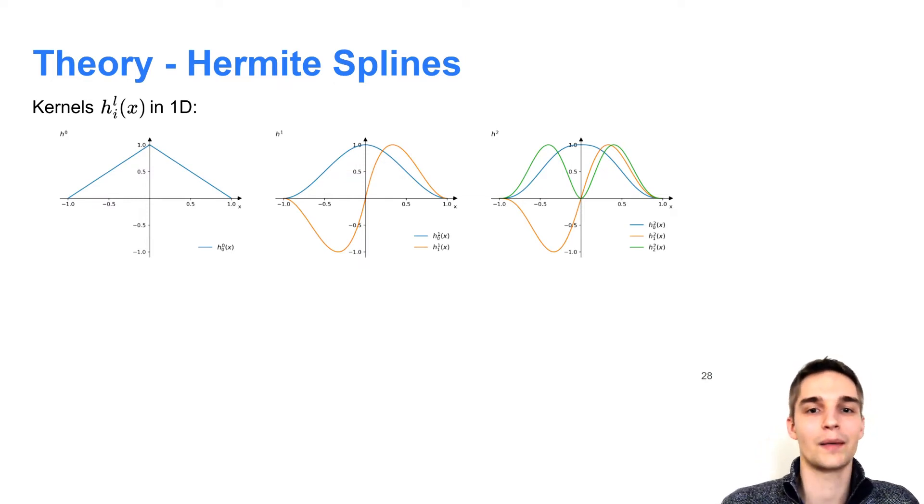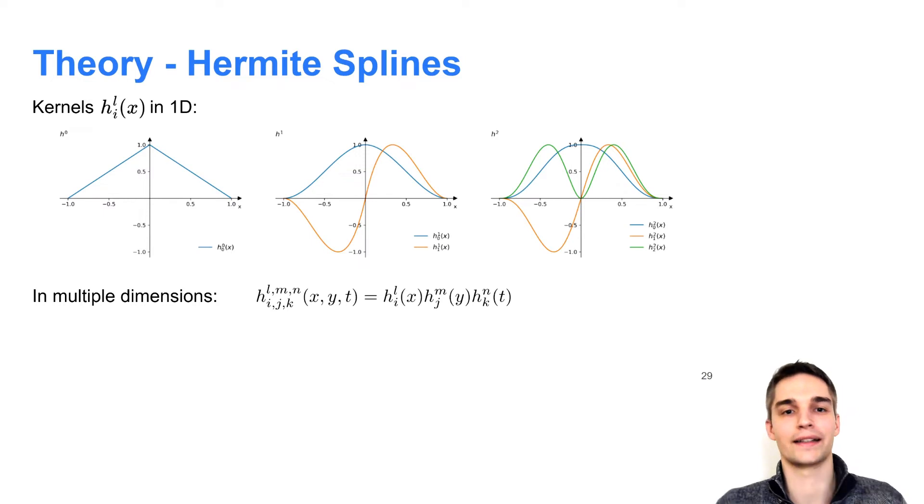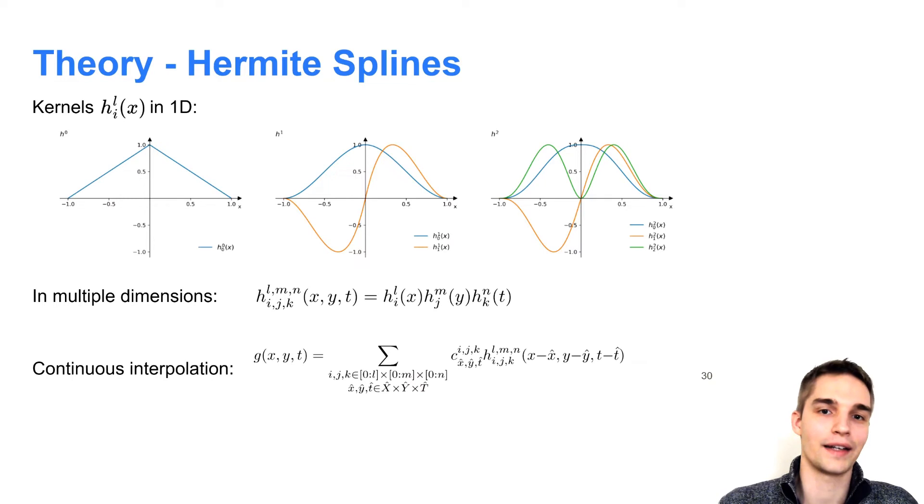In multiple dimensions, for example, x, y, and time, we can take the outer product of these 1D kernel functions. And to finally obtain a continuous field, we linearly combine these kernel functions centered around the grid points x hat, y hat, t hat, and weighted by the corresponding spline coefficients c.